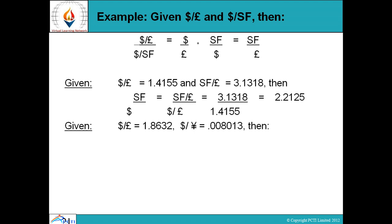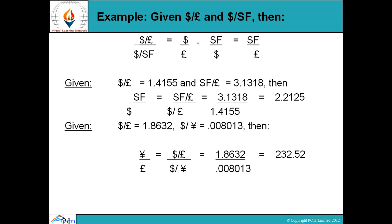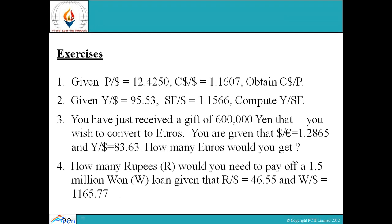Given dollar per pound equals 1.8632 and dollar per yen equals 0.008013, then yen per pound equals dollar per pound divided by dollar per yen, which equals 1.8632 divided by 0.008013, which equals 232.50.